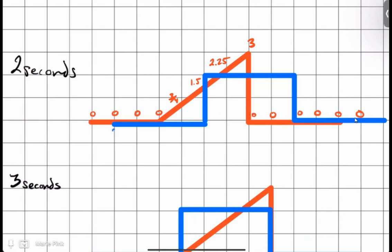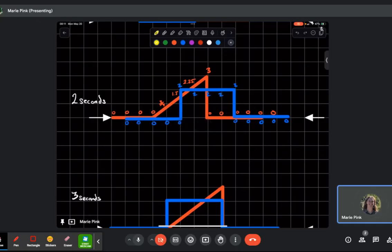And the blue wave is at zero the whole time until it jumps up to two. And then it goes back down to zero again.